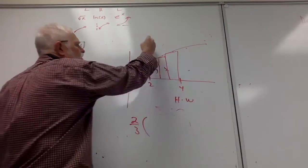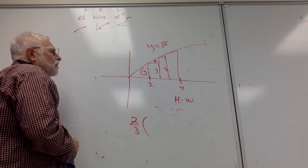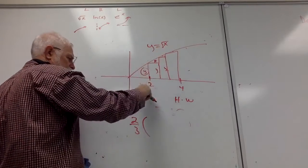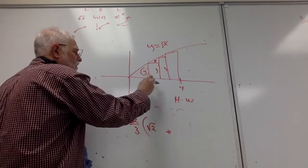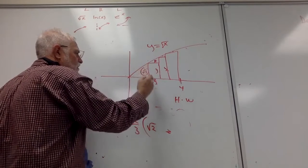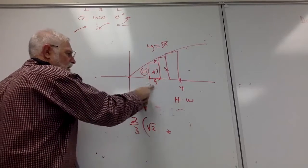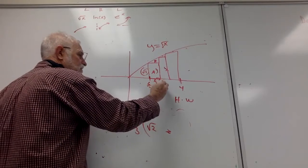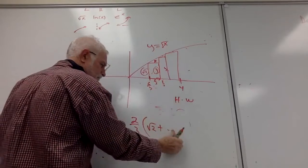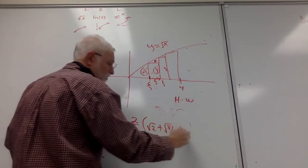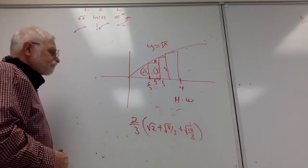This is the square root of x, so I take the square root of the x to get the y value. That's a 2 — so two thirds times the square root of two is this area. Going two thirds in that direction: 2 is 6 thirds, so I'm at 8 thirds. The next y value is the square root of 8 thirds, and the next one is the square root of 10 thirds. Done.